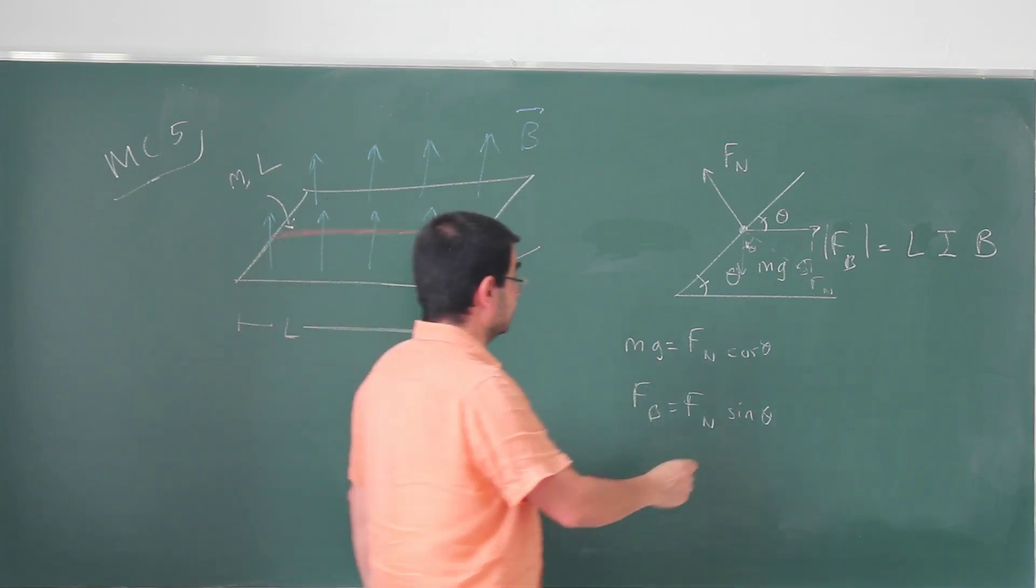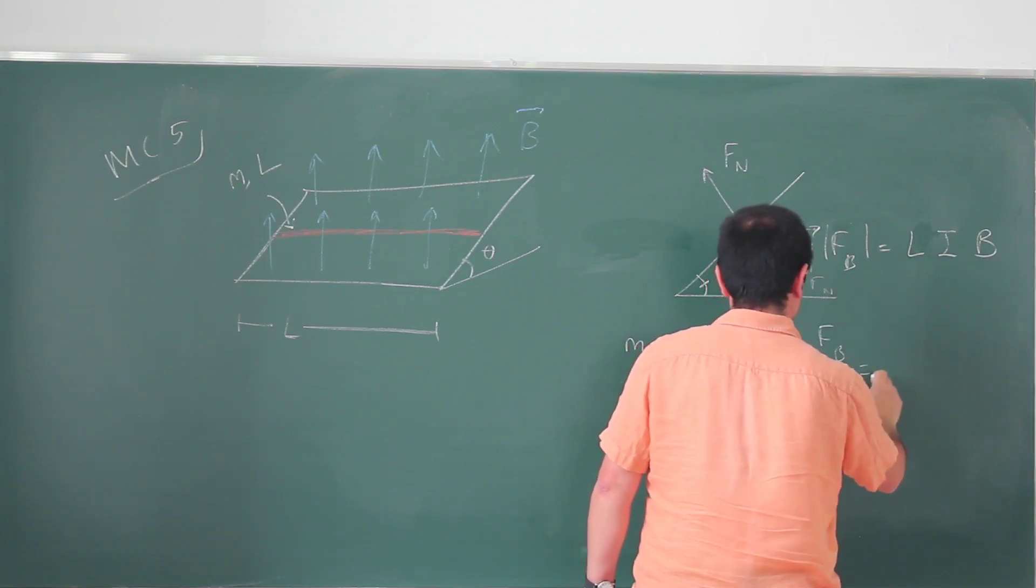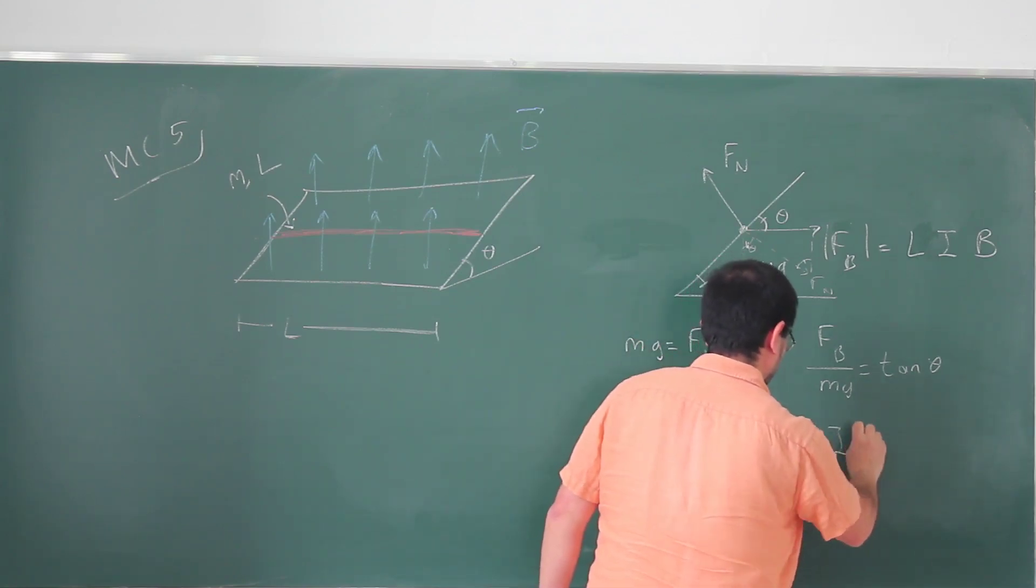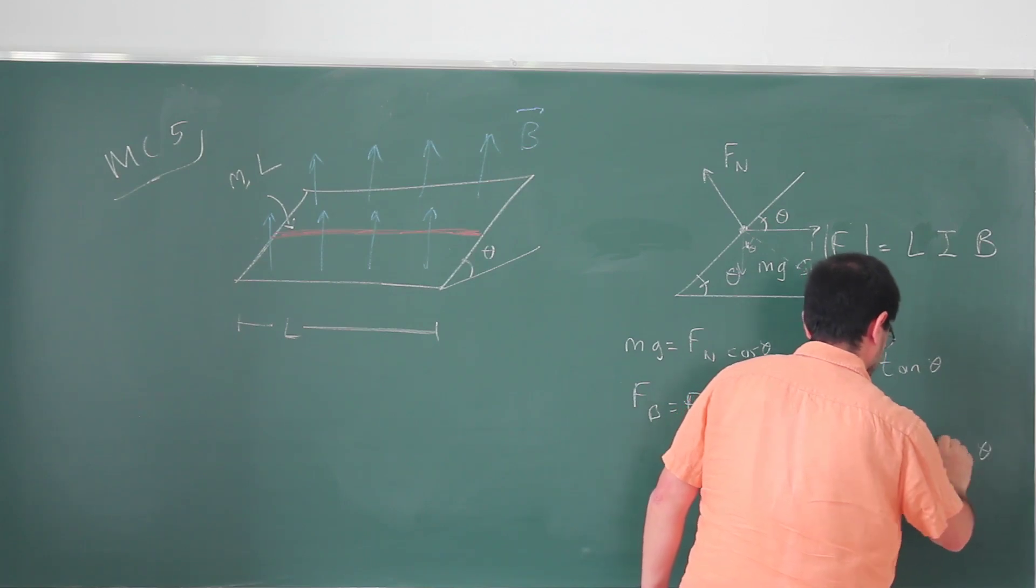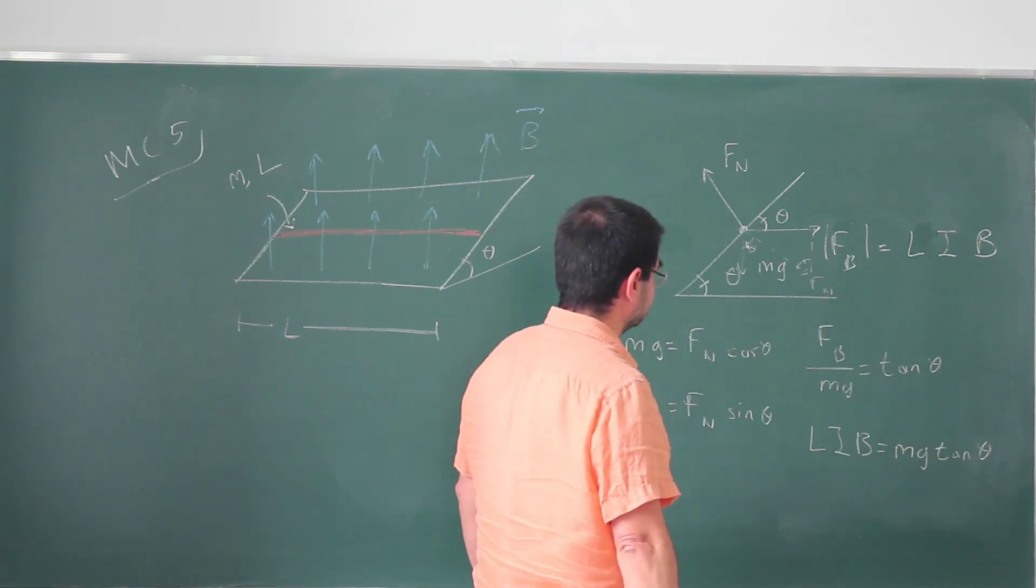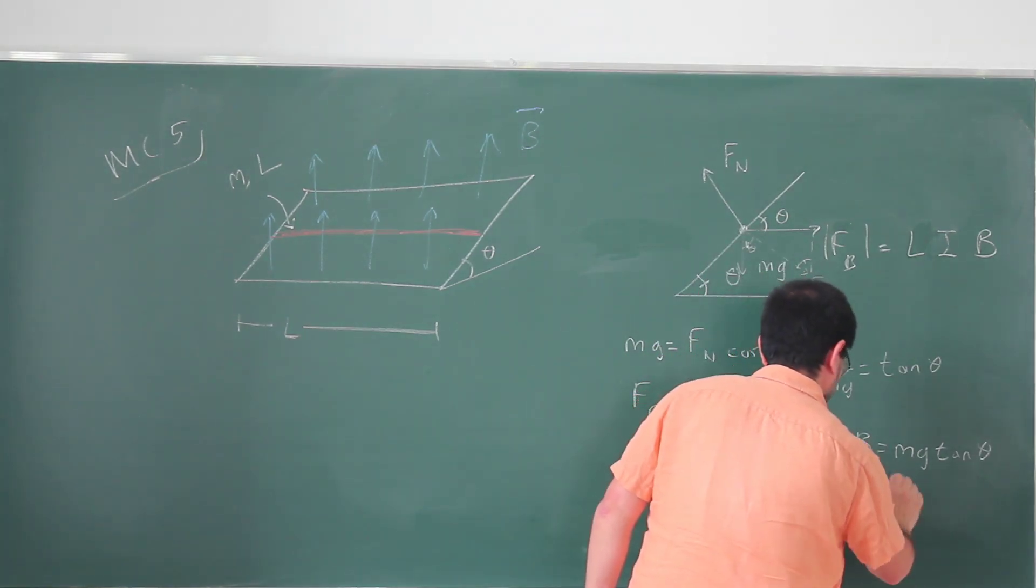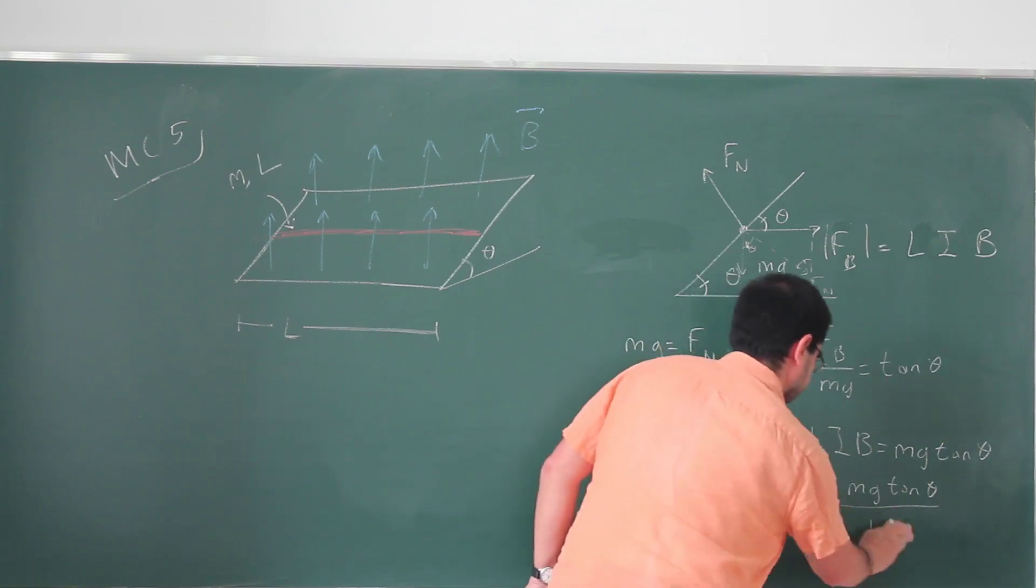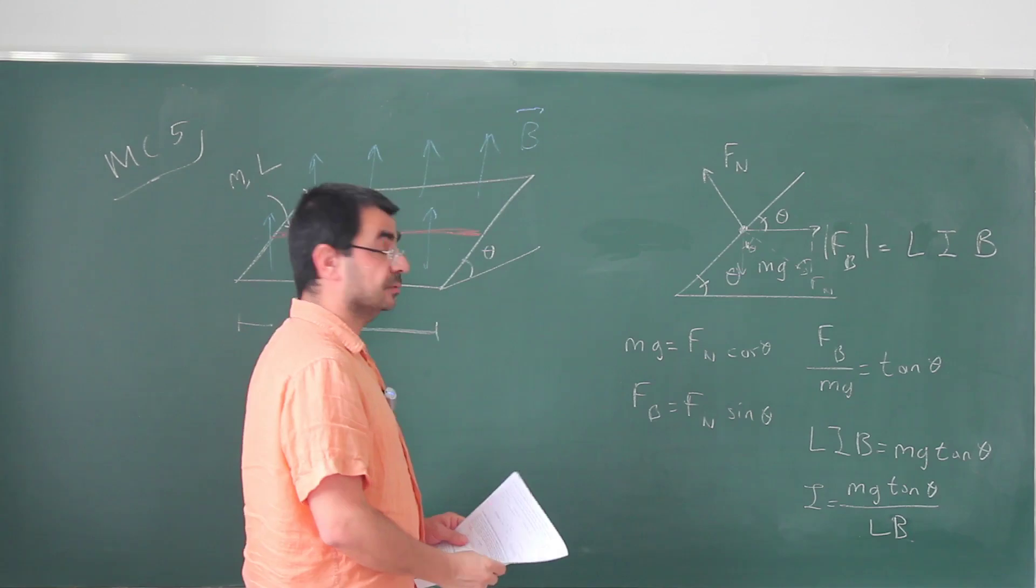And I can divide these side by side. So Fb over Mg is going to be tangent theta. So LIB is Mg times tangent theta. And if I move this to the other side, the current required is going to be Mg tangent theta divided by L times B. And this is in fact the answer that's given in the answer sheet.